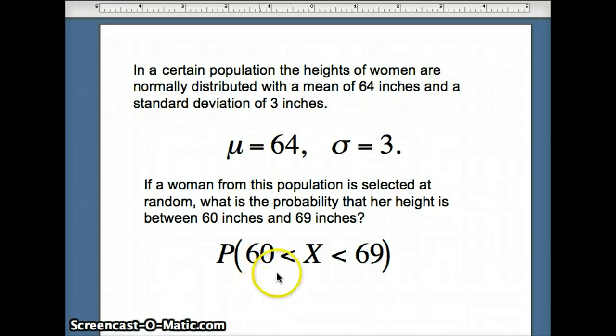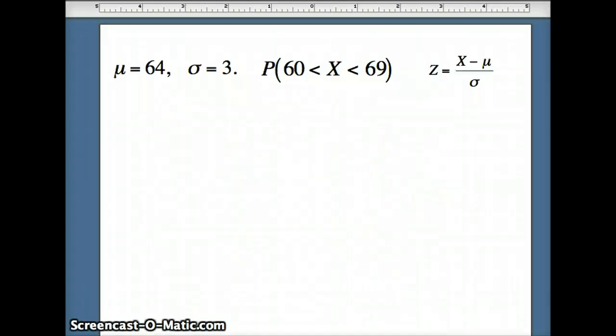That question will look like probability x is between 60 and 69. And to answer this, we've got to turn x into a z. How do we do that? Subtract the mean and divide by the standard deviation. So here's our relevant information. We're going to subtract the mean and divide by the standard deviation. 60 minus the mean, 64, divided by 3. 69 minus the mean, 64, divided by 3.